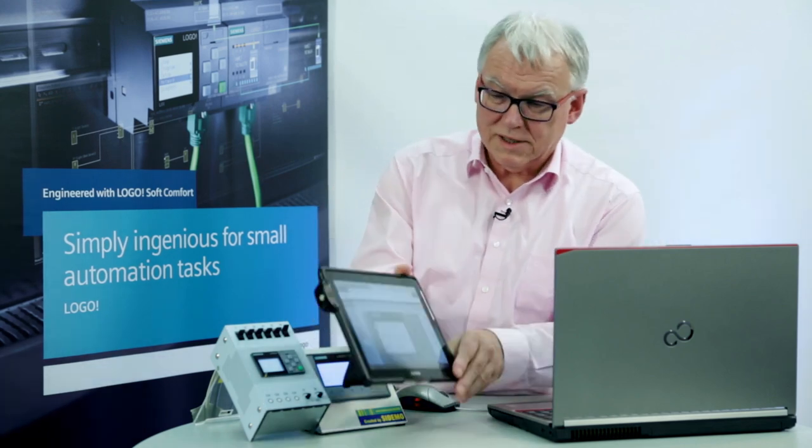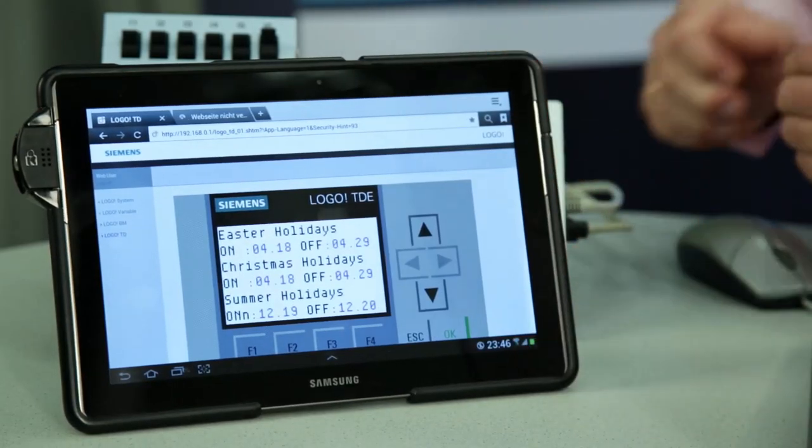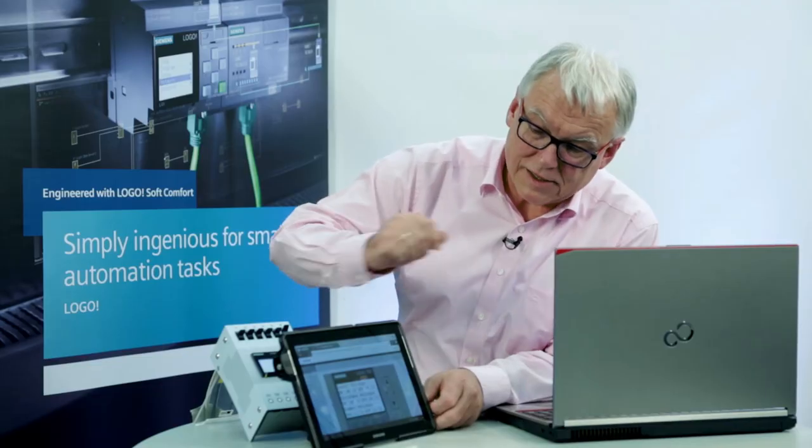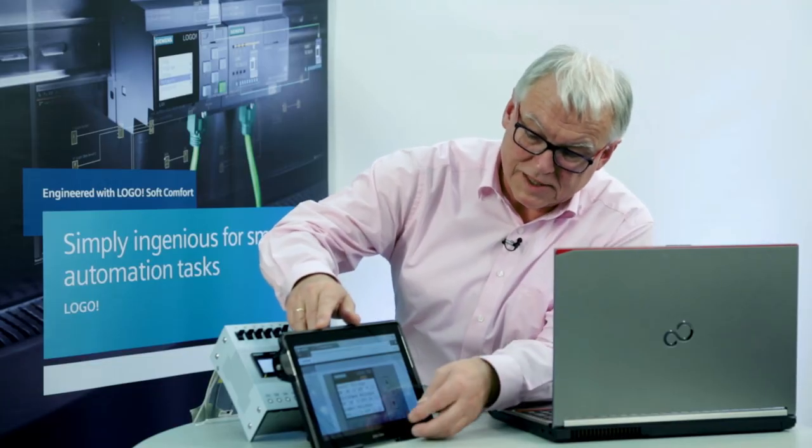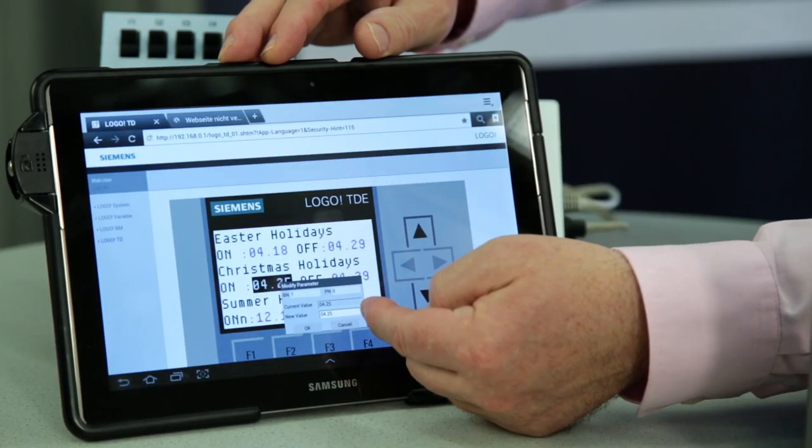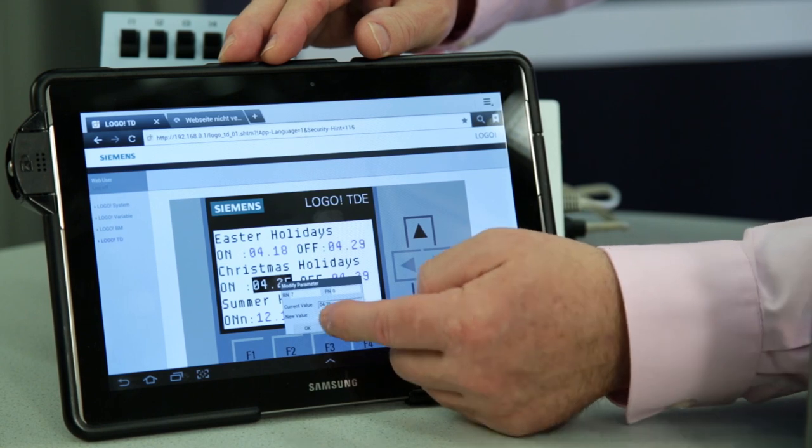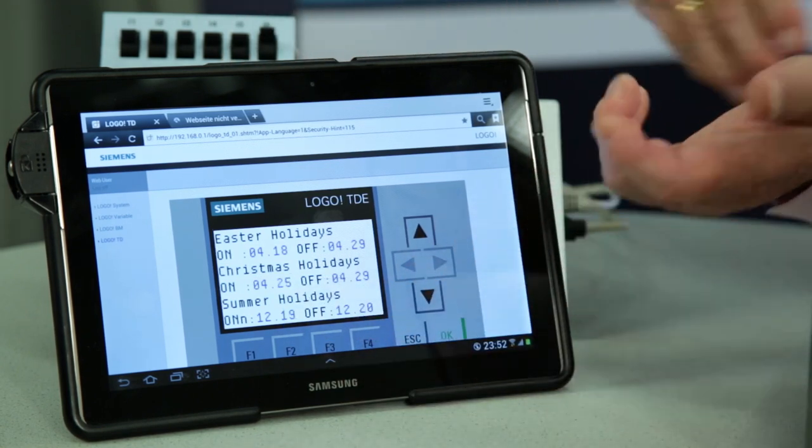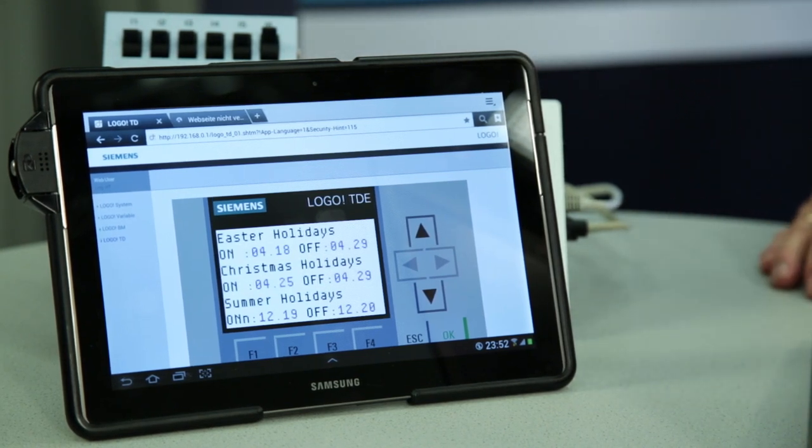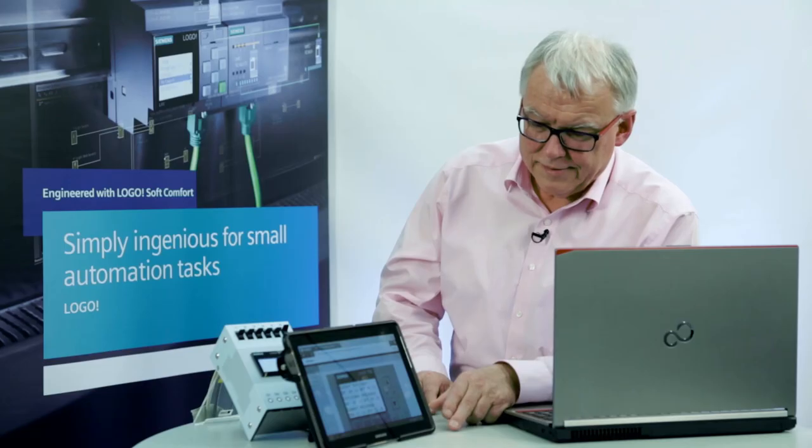Another way to change settings, if the LOGO is connected to a web server, is for me to perform the entire process with a tablet computer. To do so, I first open the menu by tapping on the parameters. Then I can change each parameter here as I wish and confirm with OK. This allows me to set the new switching time via a mobile device.